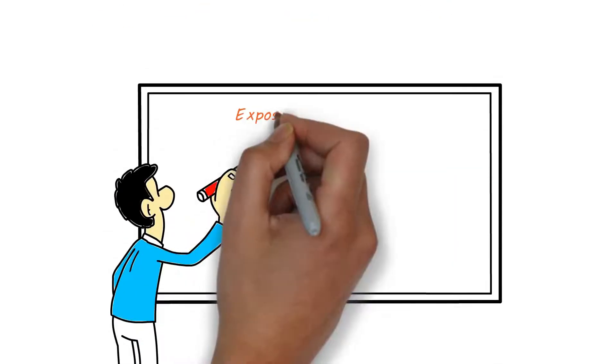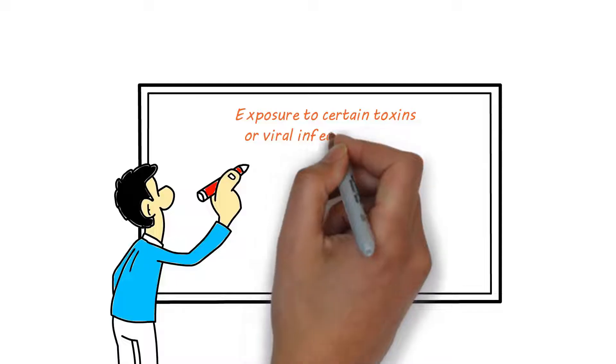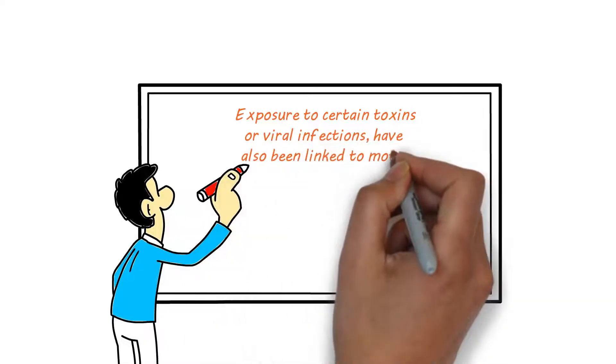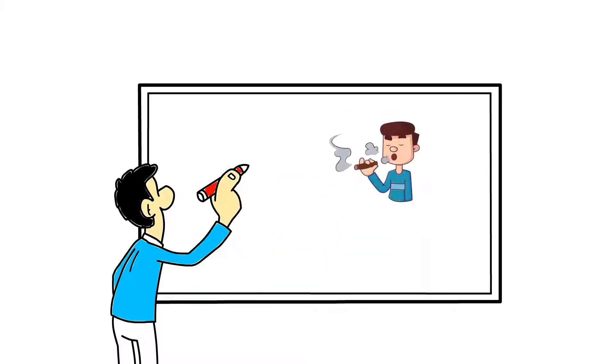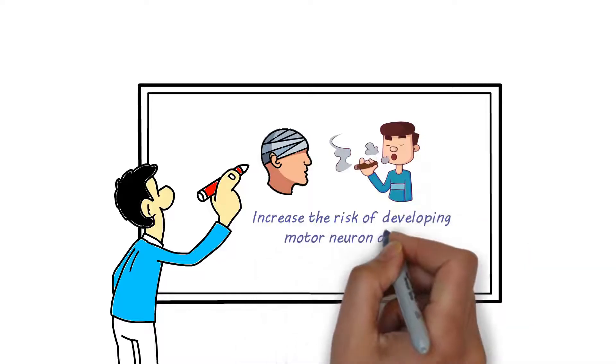Environmental factors, such as exposure to certain toxins or viral infections, have also been linked to motor neuron disease. For example, exposure to lead or mercury has been associated with an increased risk of developing ALS. Additionally, a history of smoking or head injuries may also increase the risk of developing motor neuron disease.